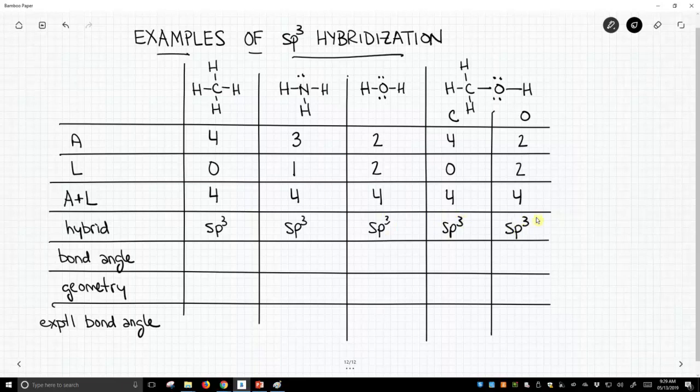Because they are all sp3 hybridized, we know approximately what the bond angle will be for each one of these. It's going to be 109.5 degrees for every single one of them. Because bond angles are determined by the hybridization of your atom.